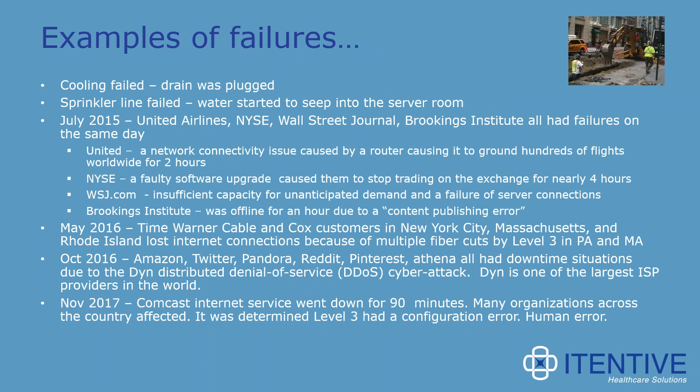This next slide shows some examples of failures, to remind us of the different types of things that can happen with regards to our systems failing. We have up there a sprinkler line failure in a computer room where a sprinkler went off and water started to seep into the server room. Because of that, they had to shut down the server room.